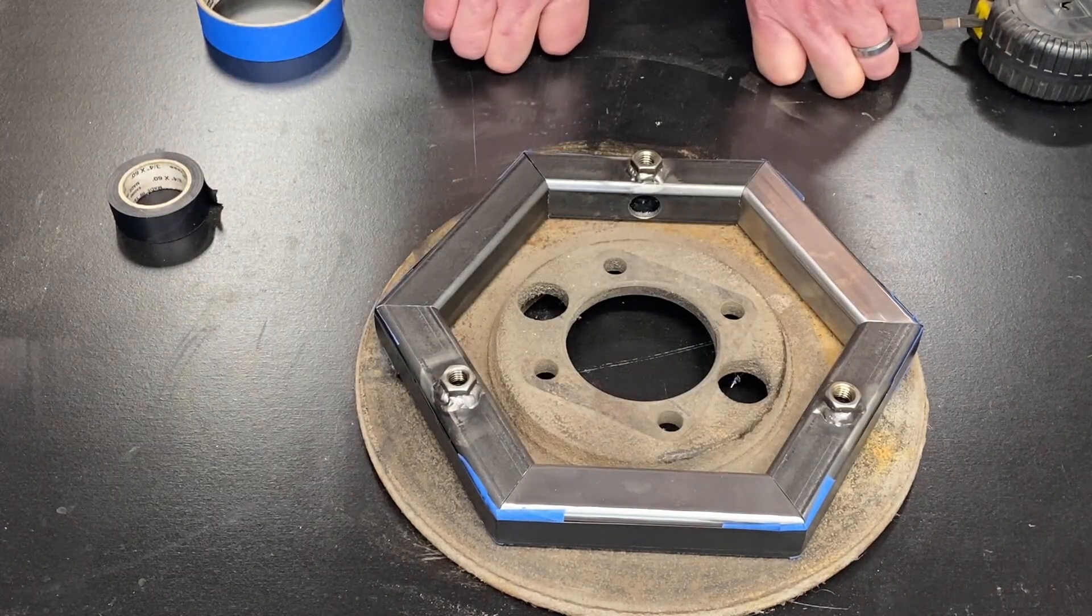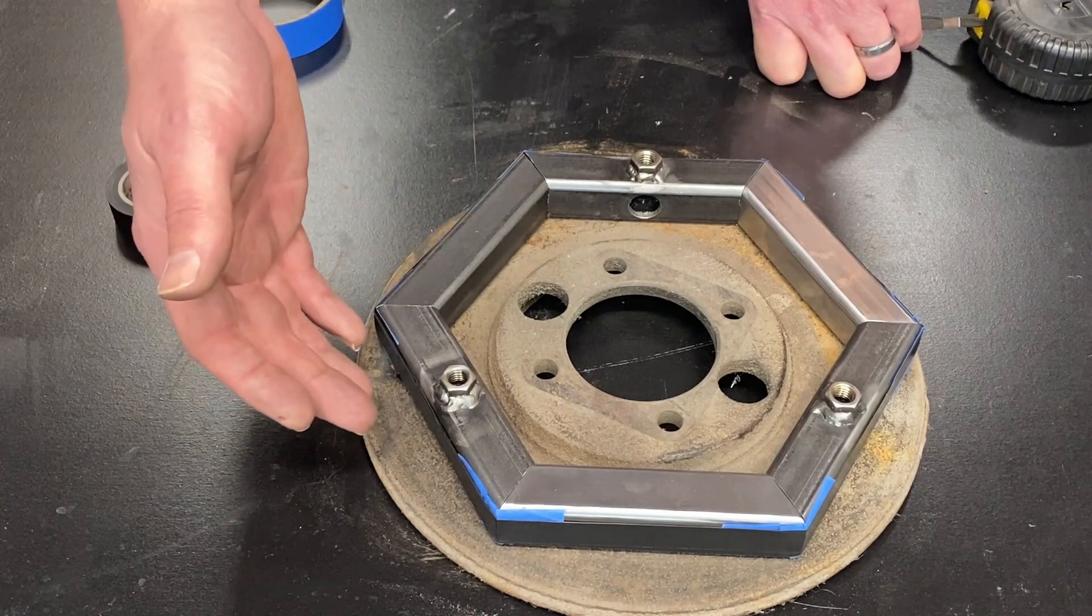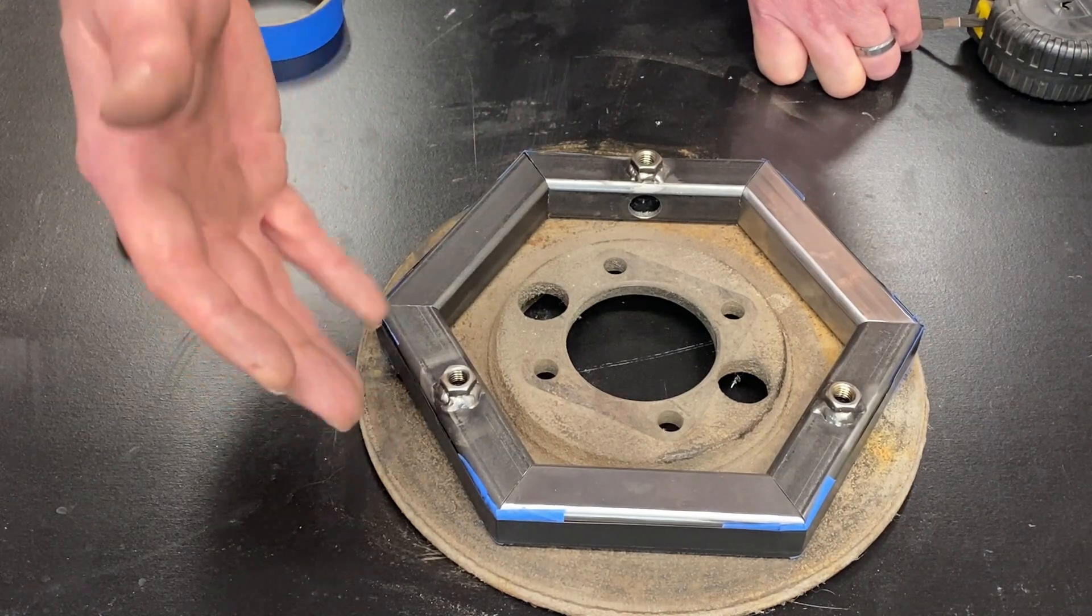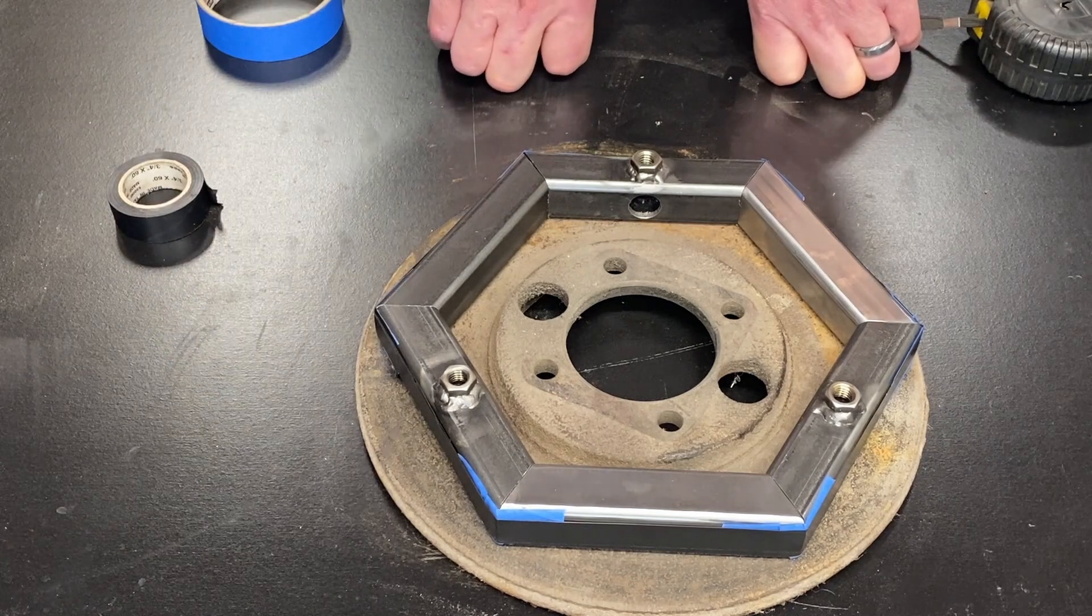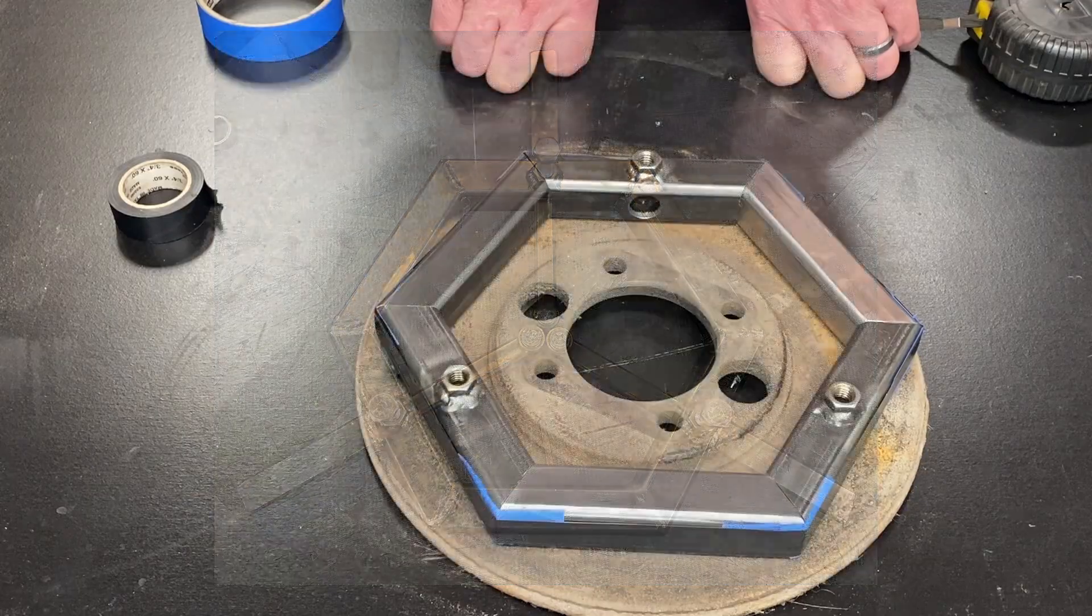Once we have it totally tack welded and everything is exactly where we want it, we can remove the tape, we can remove it from the brake rotor, take the clamps off, and finish welding it. And you will have a nearly perfect hexagon every time.